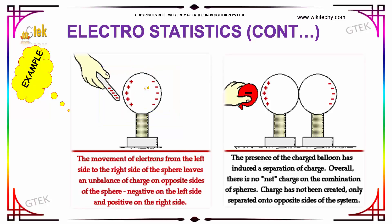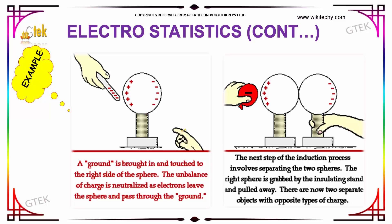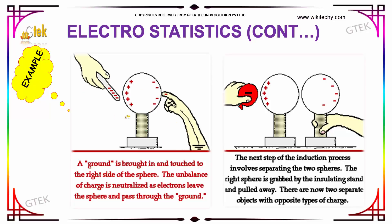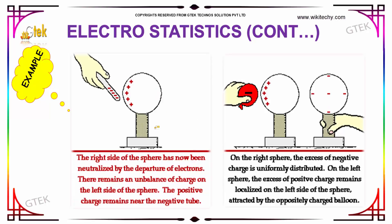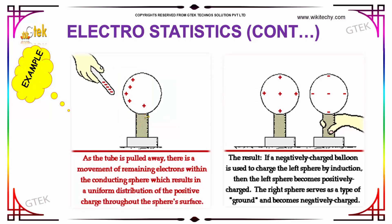So negative charge accumulates on one side while positive charge remains on the other side of the sphere. When a ground is brought in and touched to the right side of the sphere, the unbalance of charge is neutralized as electrons leave the sphere and pass through the ground. The right side of the sphere is neutralized by the departure of electrons, leaving an unbalanced positive charge on the left side of the sphere. As the tube is pulled away, remaining electrons within the conducting sphere redistribute, resulting in a uniform distribution of positive charge throughout the sphere's surface.